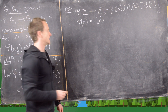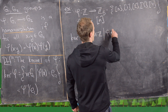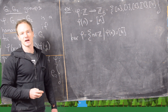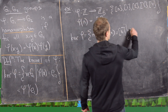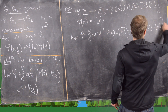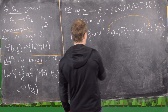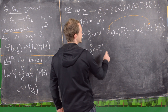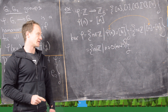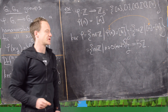Let's calculate the kernel in this case. The kernel of phi is all n in Z such that phi of n equals the identity in Z5, which is the equivalence class 0. That's the same as all n in Z such that the equivalence class of n equals the equivalence class of 0 — exactly how we defined phi. That's the same as all n in Z congruent to 0 mod 5, meaning n is a multiple of 5. So the kernel here is 5Z.